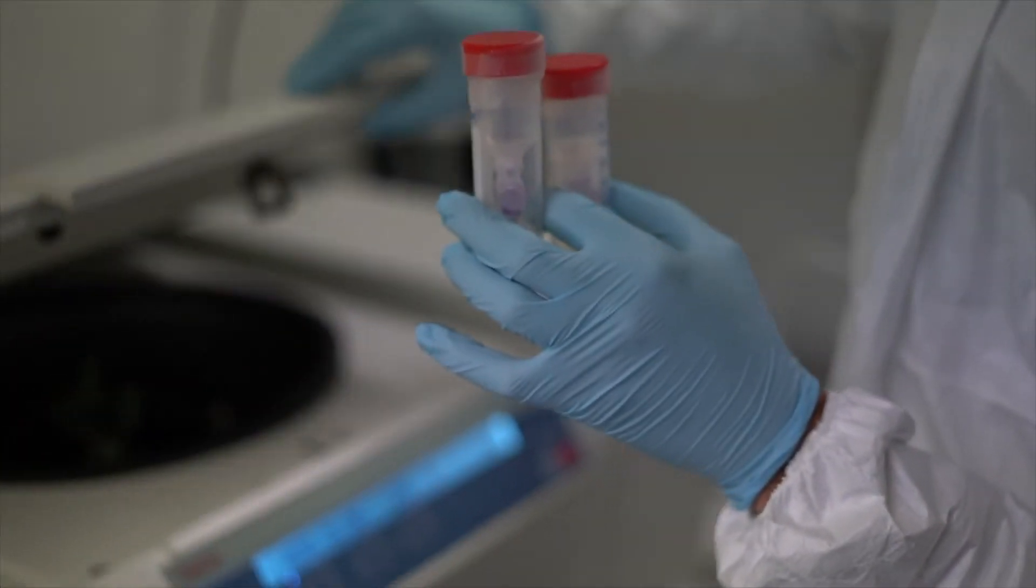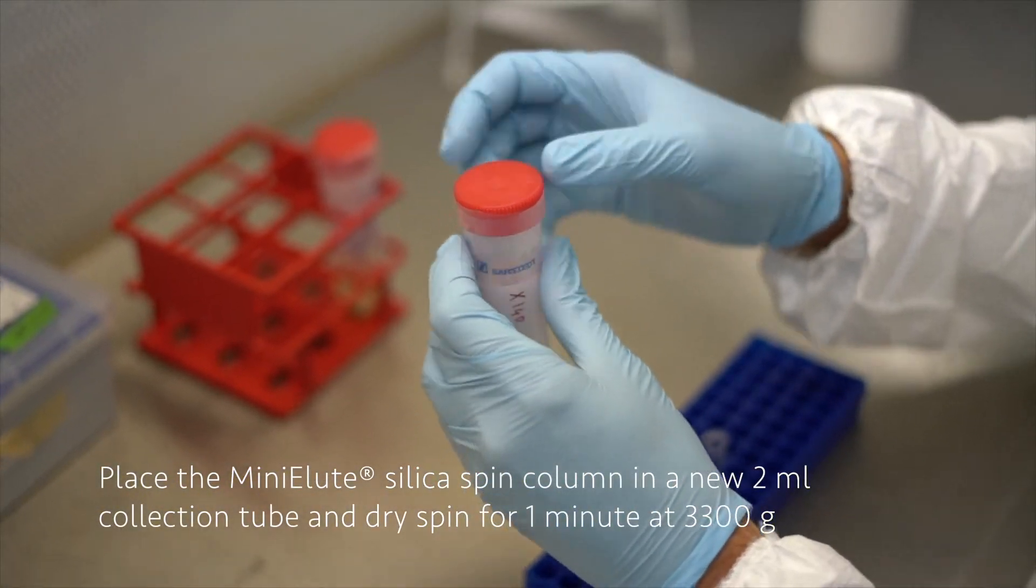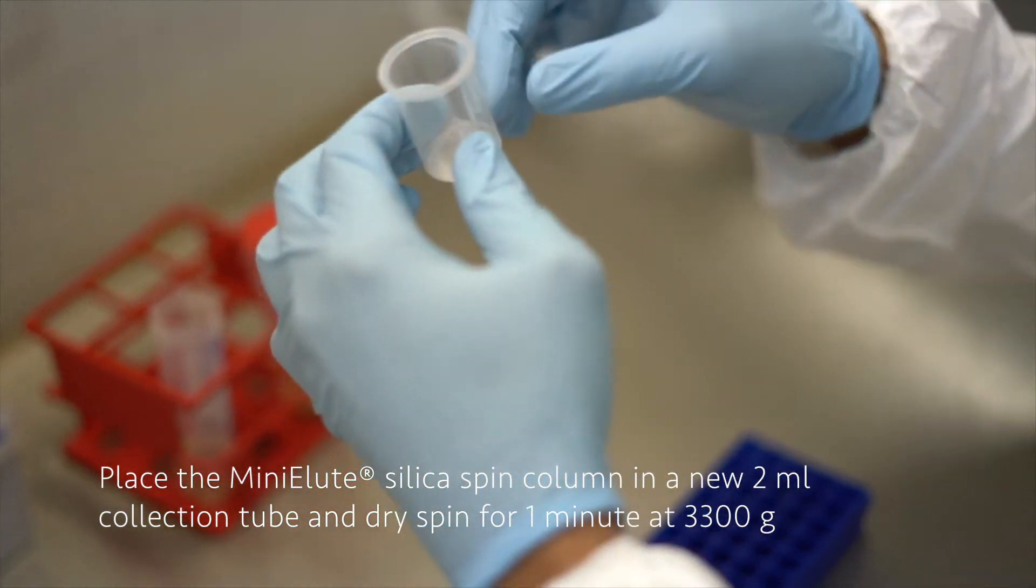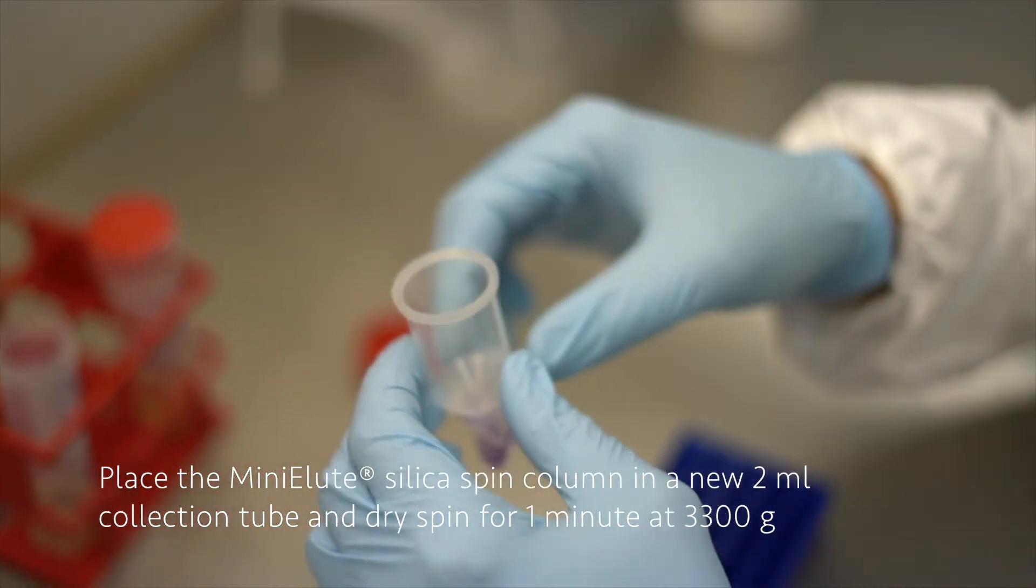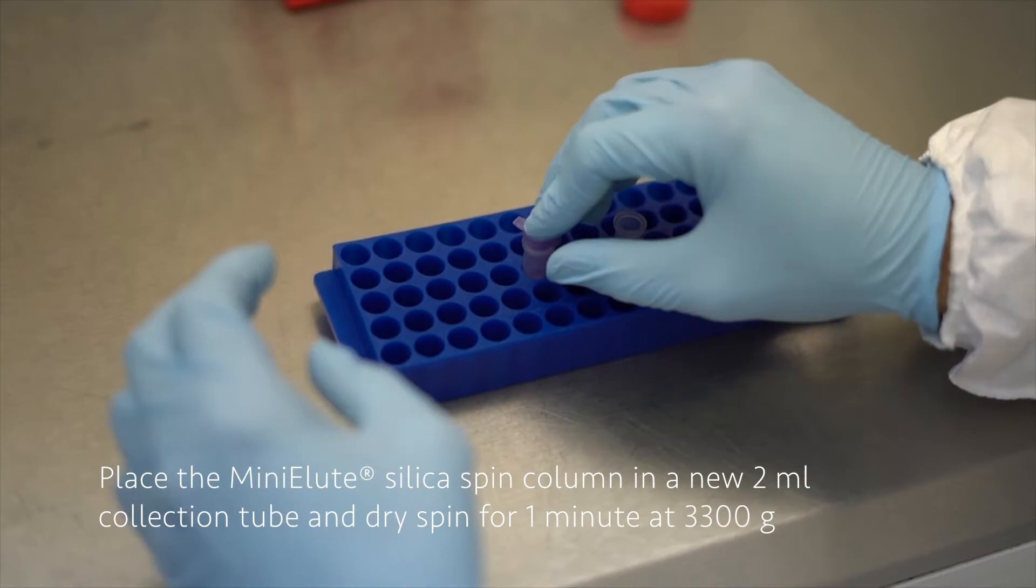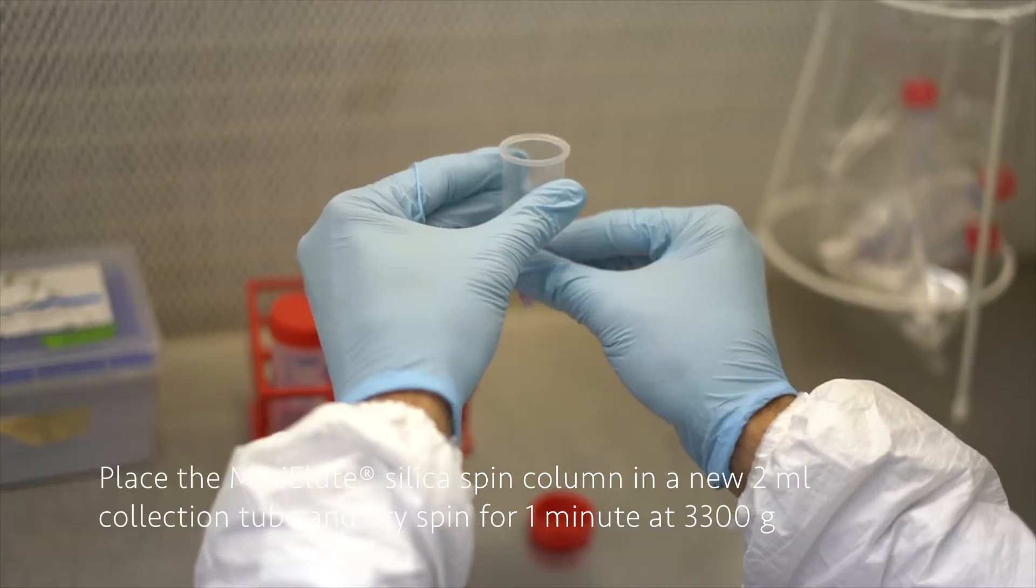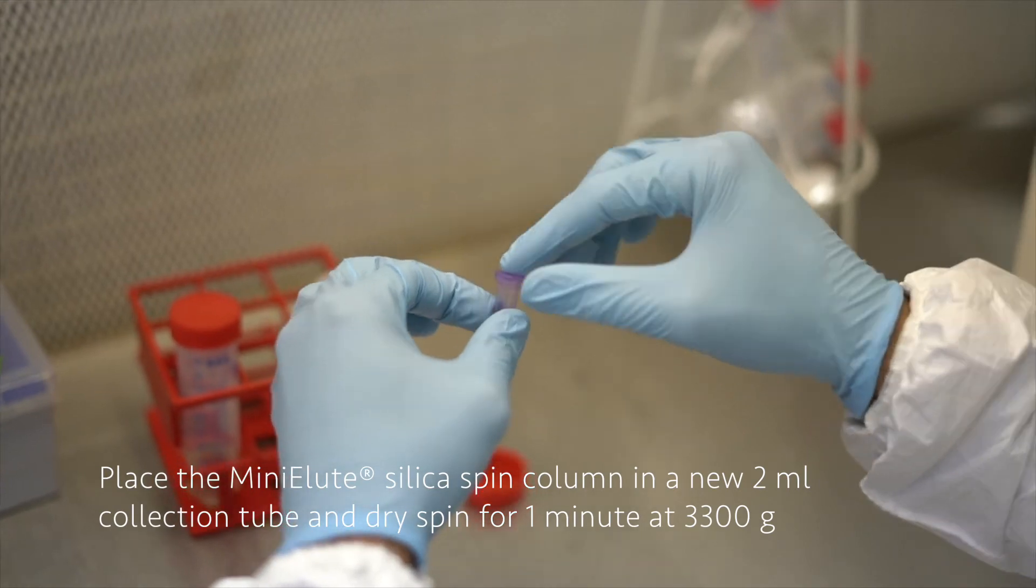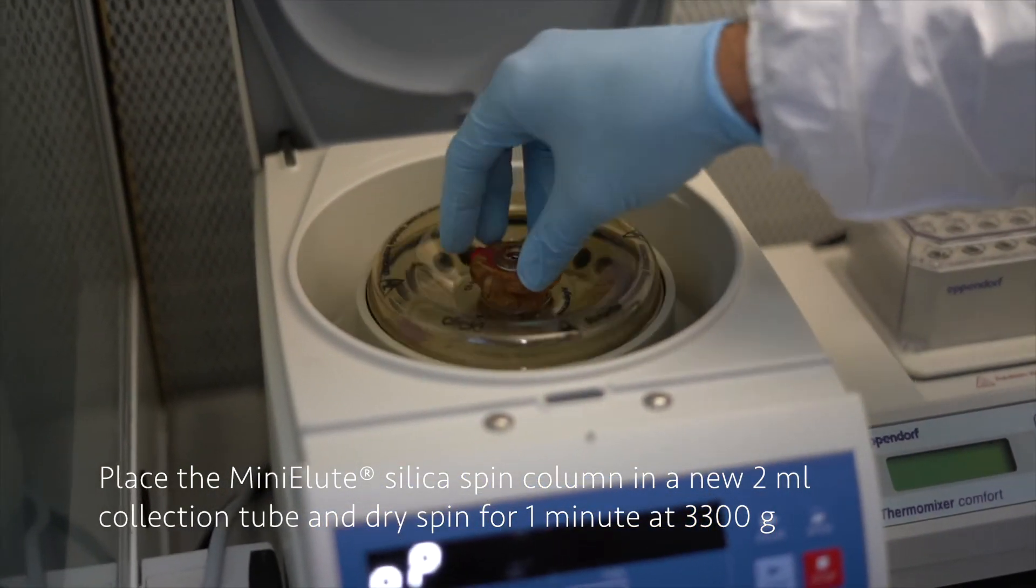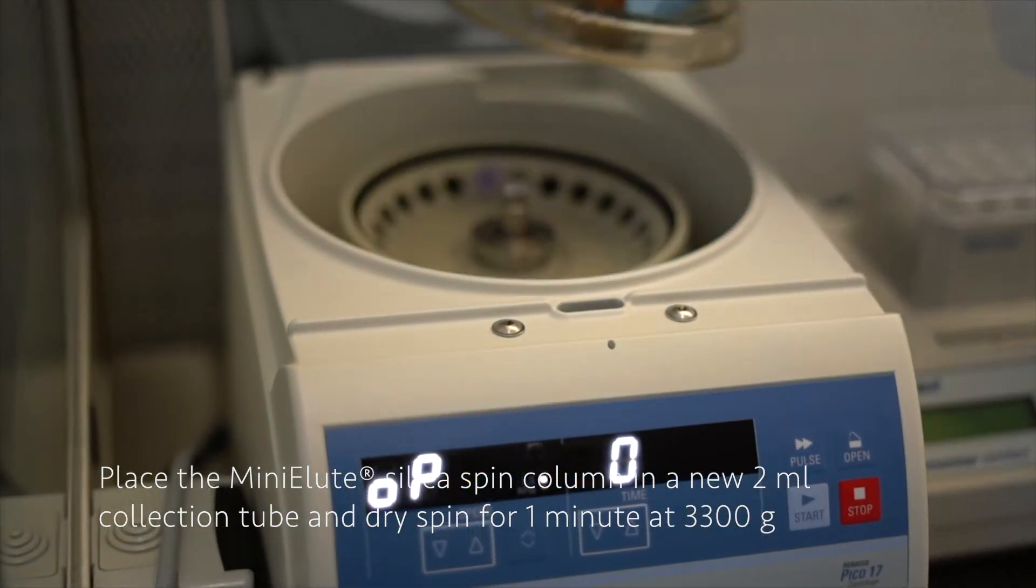What we have to do next is to disassemble the binding apparatus and place the MinElute column back to the 2 milliliter collection tube. You have to be a bit careful doing that, especially in this case where there is some fluid still in the MinElute silica. Now we have to dry-spin the columns in a bench centrifuge at 3300 g for 1 minute. We have to be sure that everything is flowing out of the MinElute silica column.